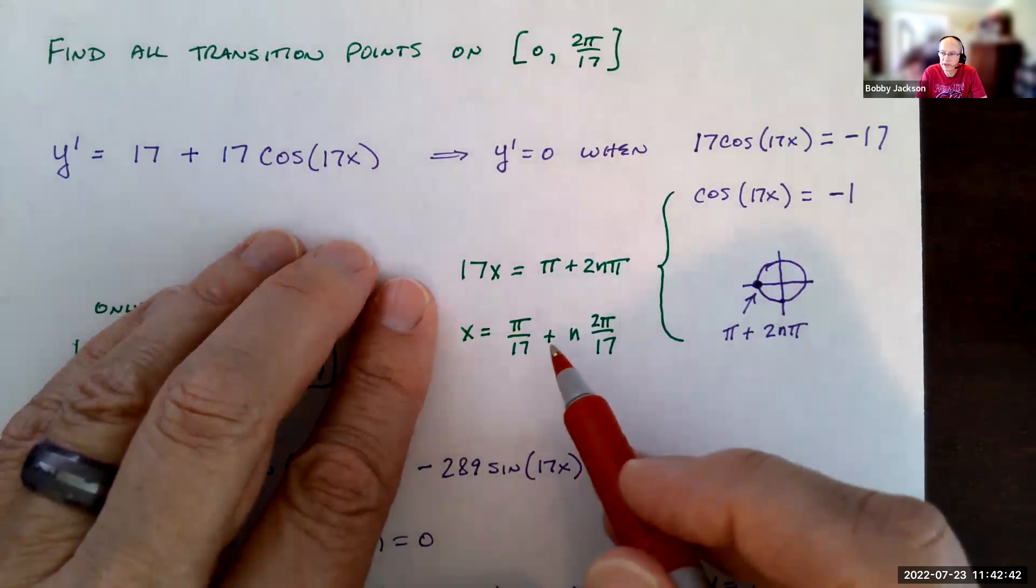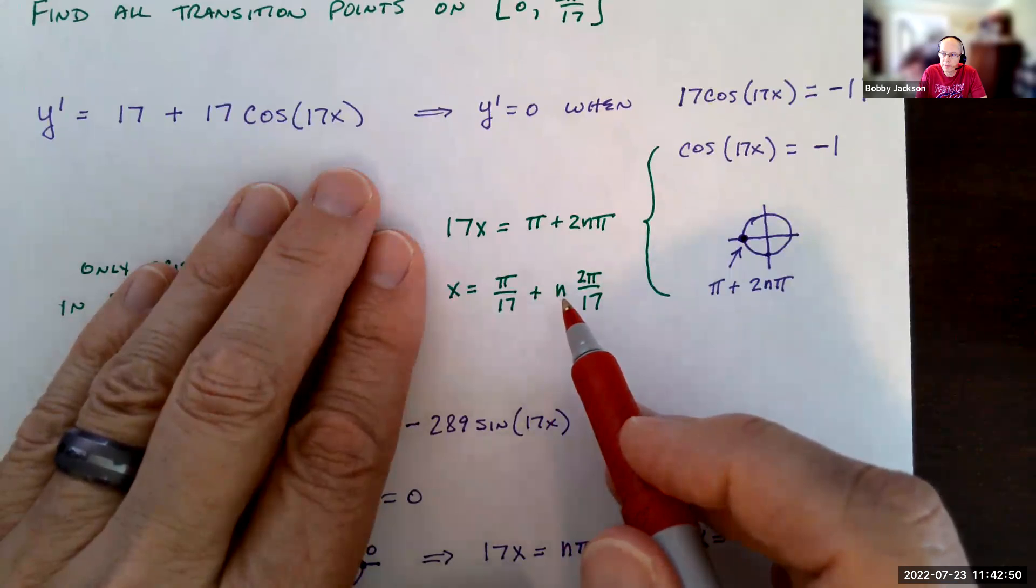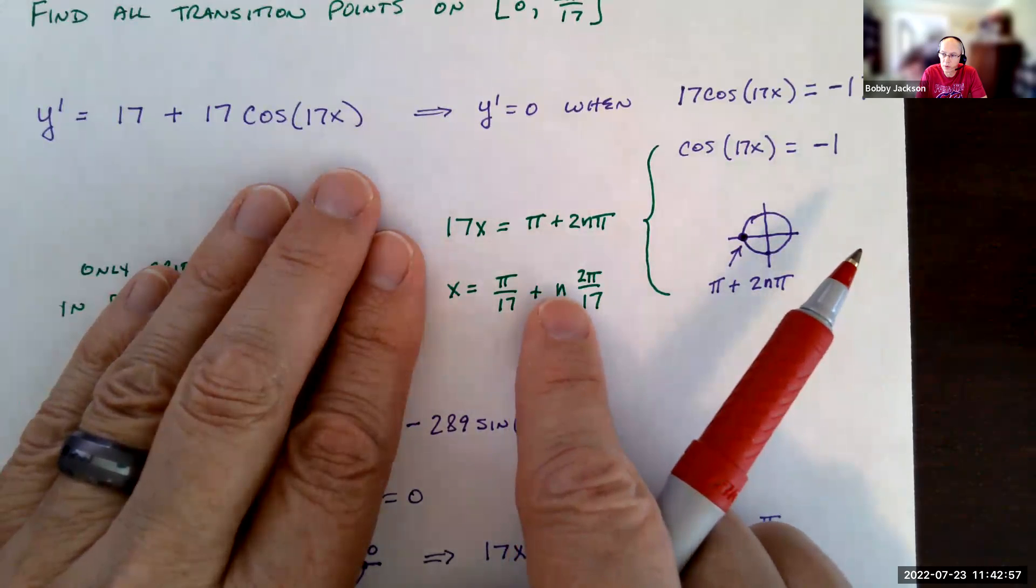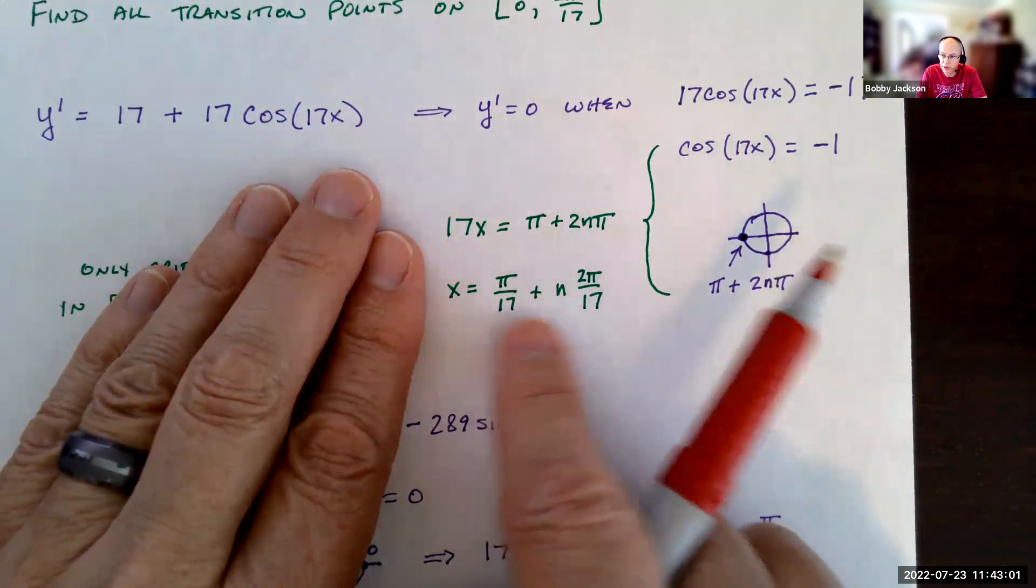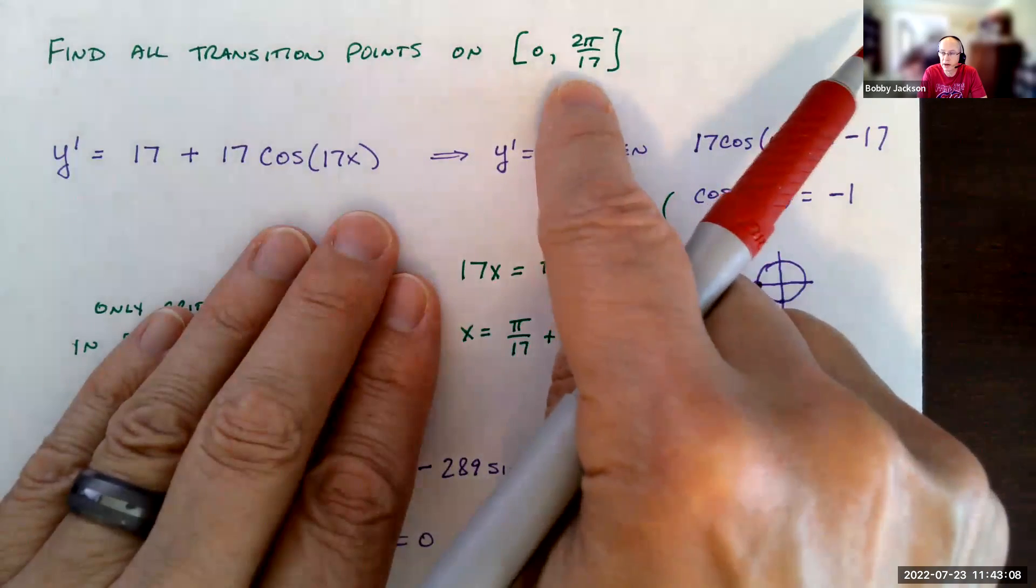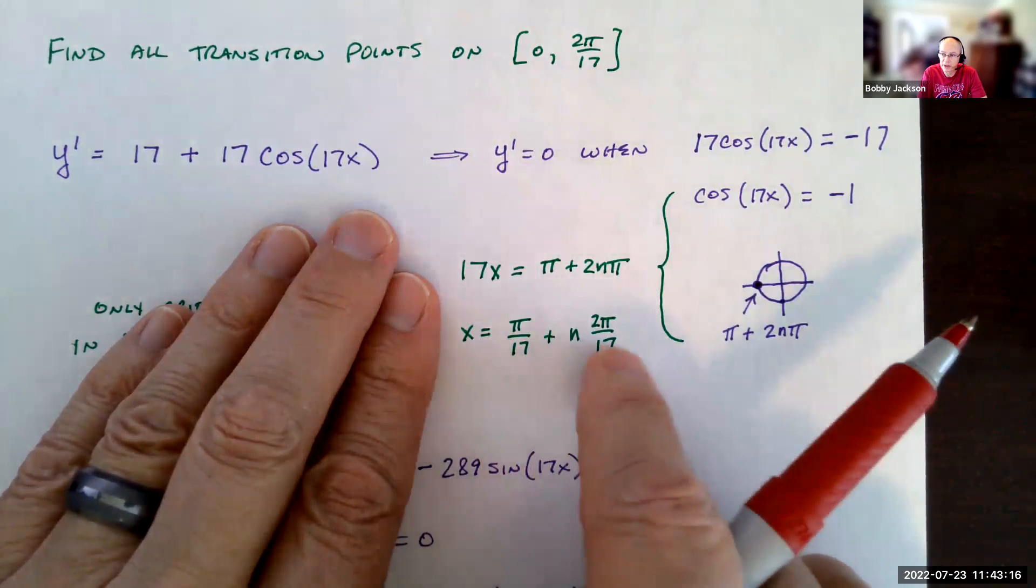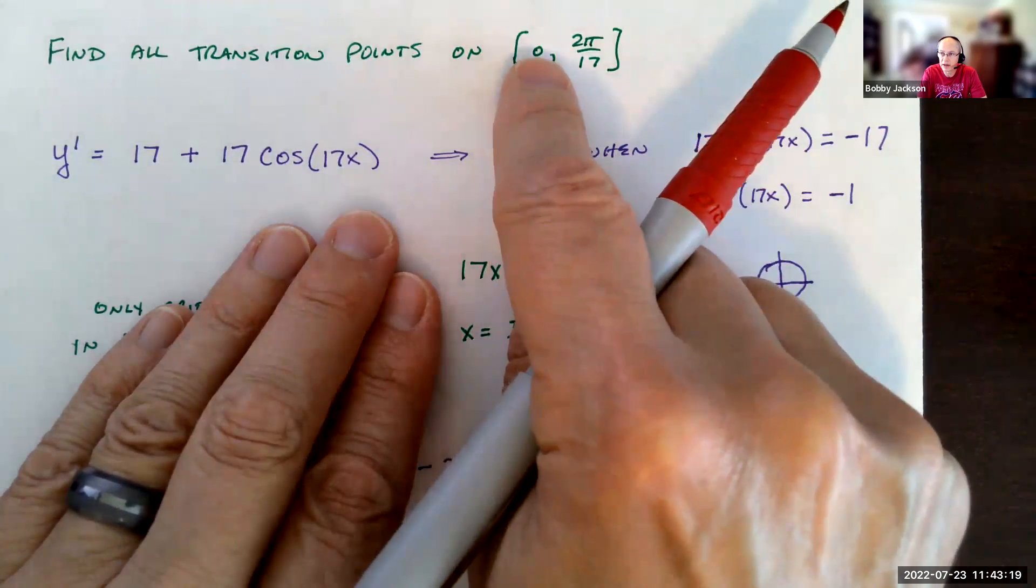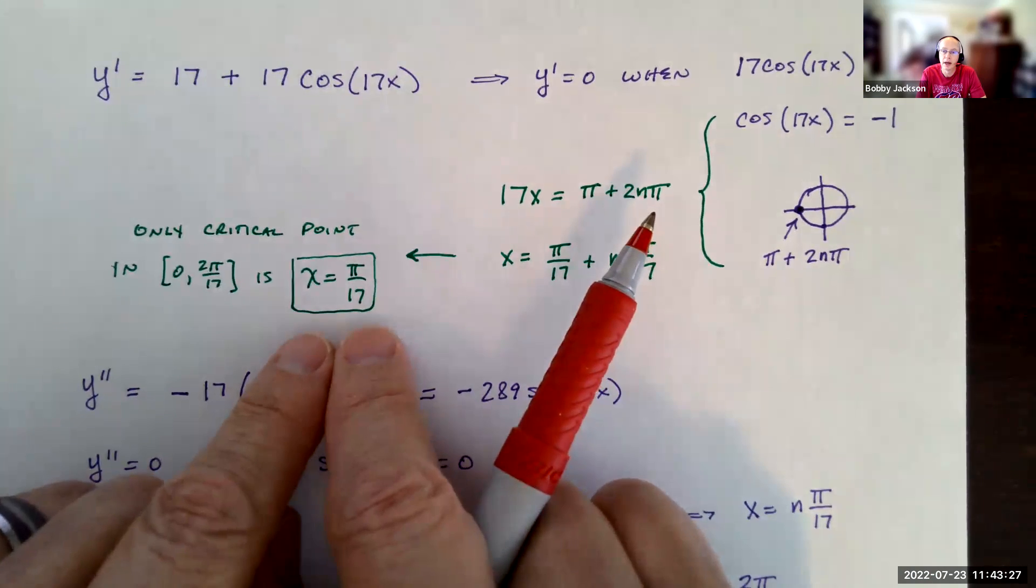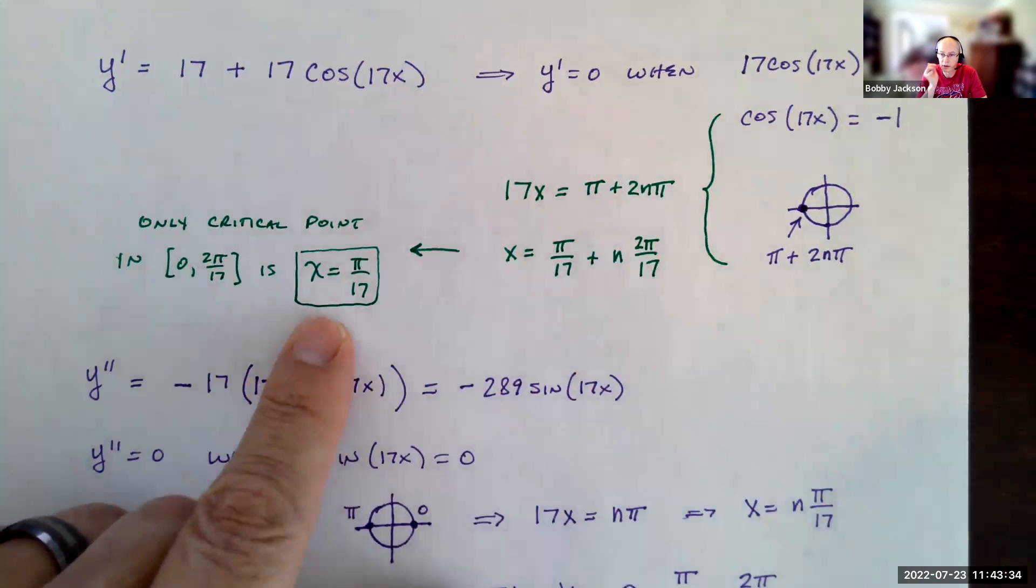Dividing by 17, x = π/17 + 2πn/17. If n is 0, we get just π/17, so that's one solution. When n is 1, I get π/17 plus 2π/17, that's a total of 3π/17. But 3π/17 is too big, right? We're stopping at 2π/17. If n is negative 1, we would get negative π/17, and negative values are not in this interval. So the only critical point is π/17. That's our critical point where the derivative is 0 or undefined.